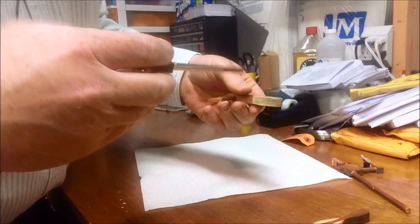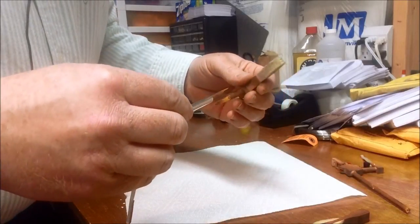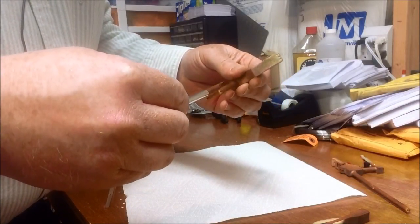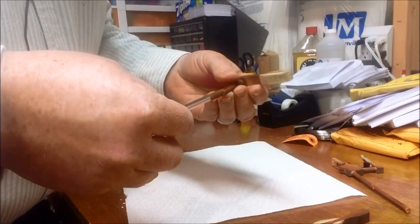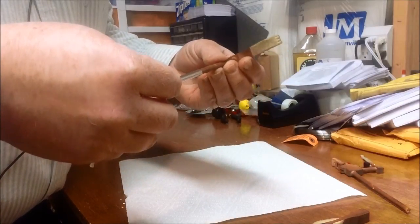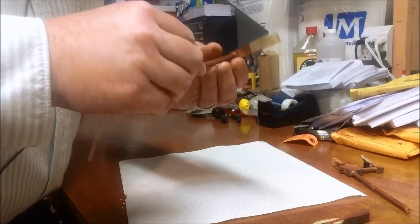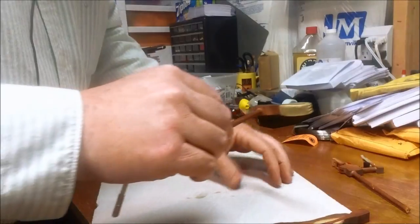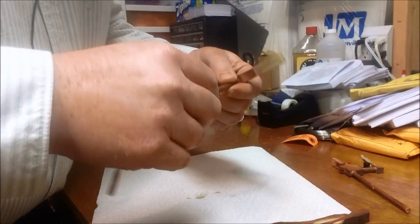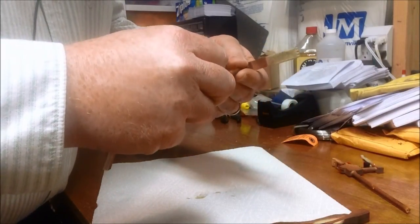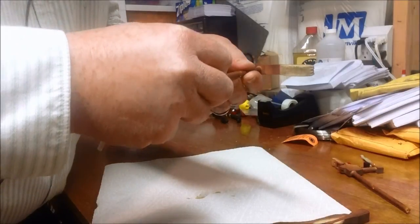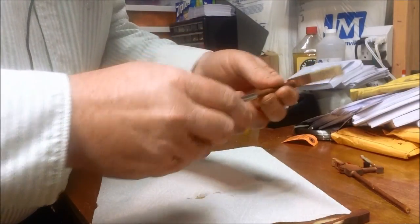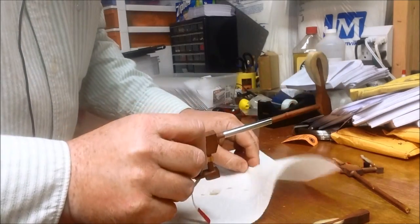So once you have the glue on you're going to put the pieces together and you want to line them up just like they were when they were broken, so that you have all the alignment and everything in place. And if there's slivers that you can line up.